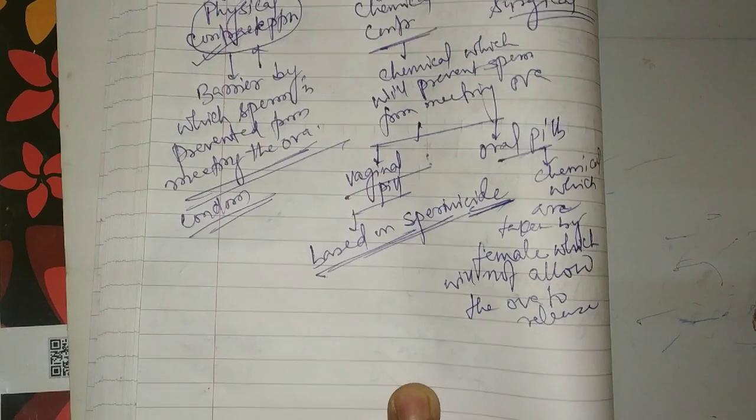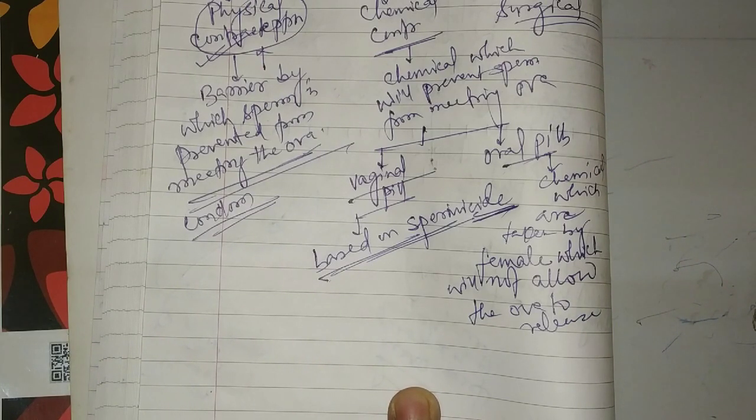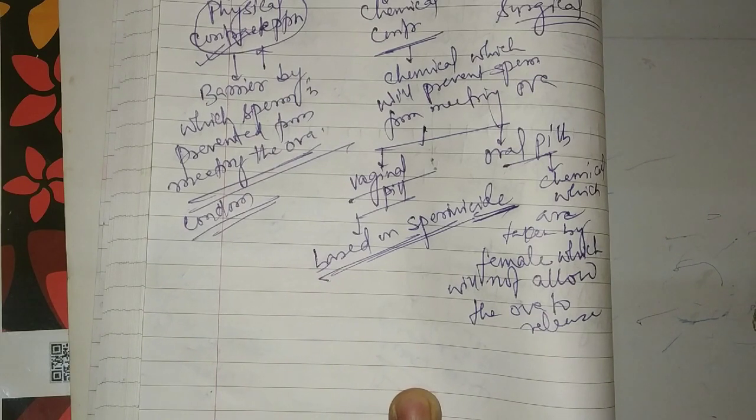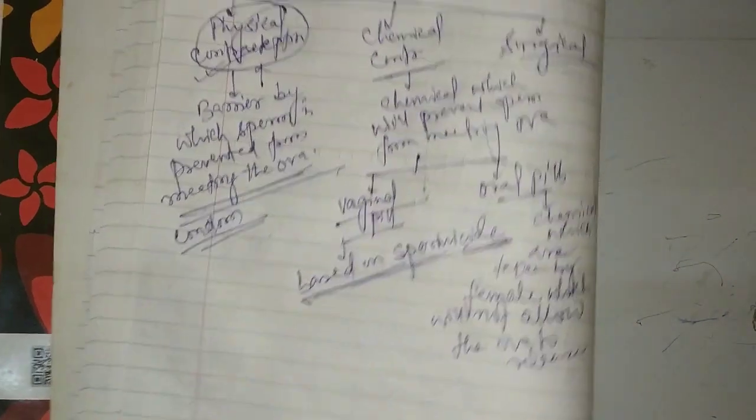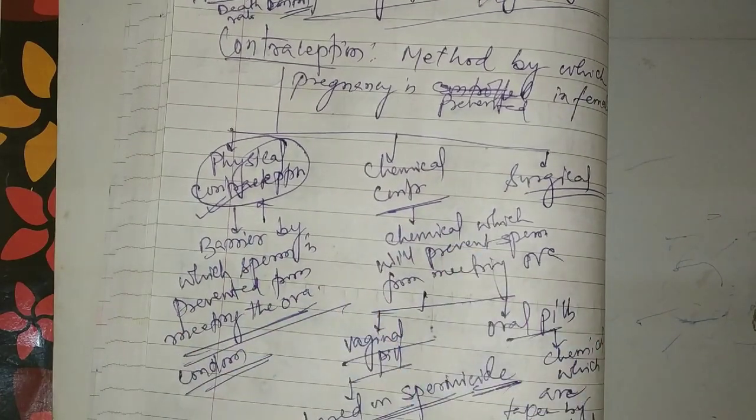No. If we have oral pills, such as Mala-D, the pills after taking them stop the ova production. So until these pills are taken by females, ova production will not happen. When ova production does not happen, then there will be no chance of pregnancy. So in this way, we can control the pregnancy by the physical and chemical method.